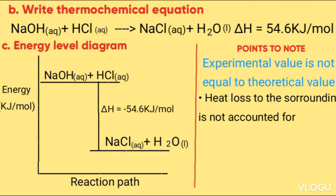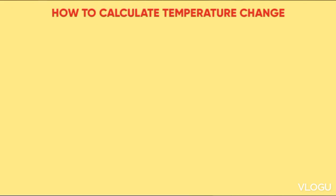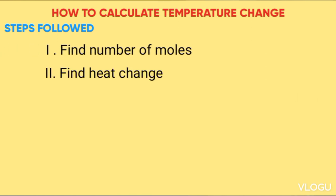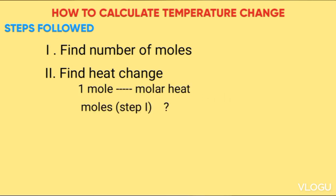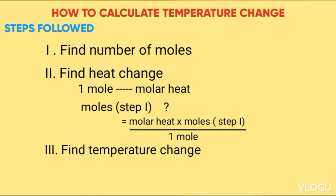Next we look at how to calculate temperature change in an example of enthalpy of precipitation reaction. When finding the change in temperature, follow three steps: first, find the number of moles; then find the enthalpy change using the molar heat — 1 mole equals the molar heat, so scale to the moles from step one; and in the last step, find delta T = enthalpy change ÷ (M × C).